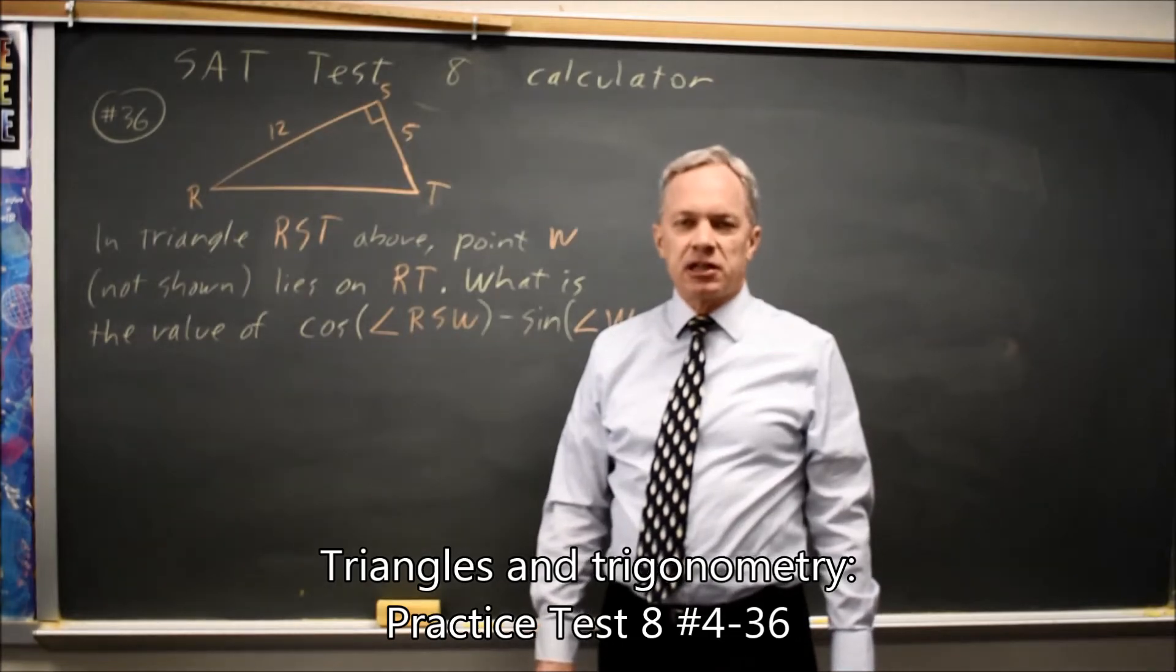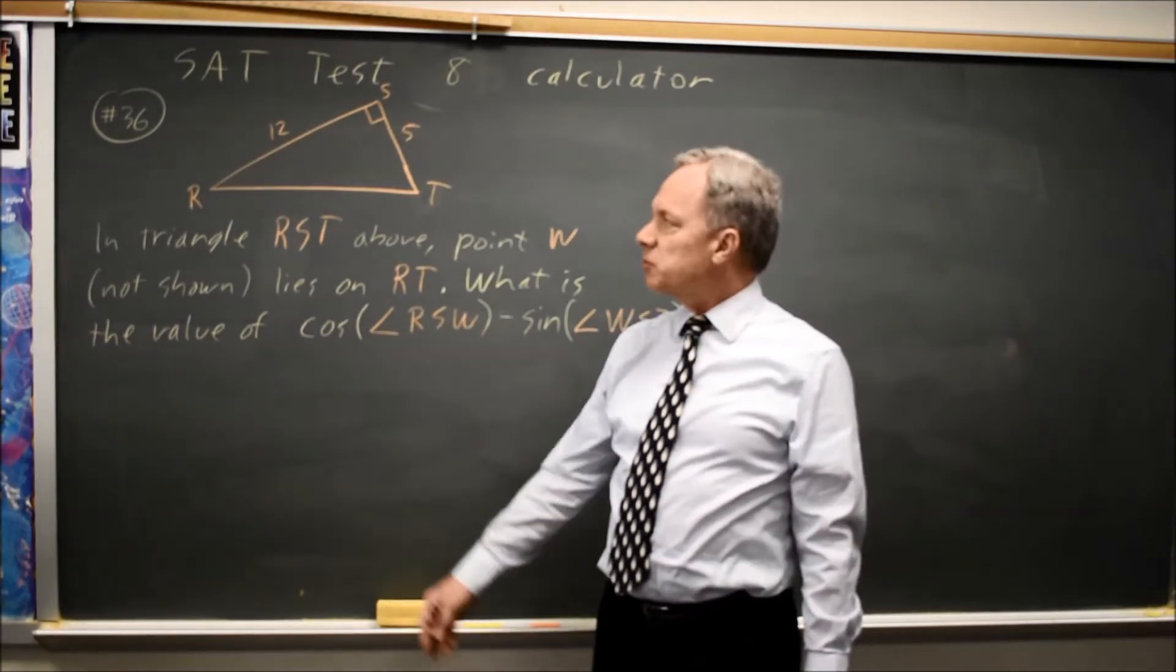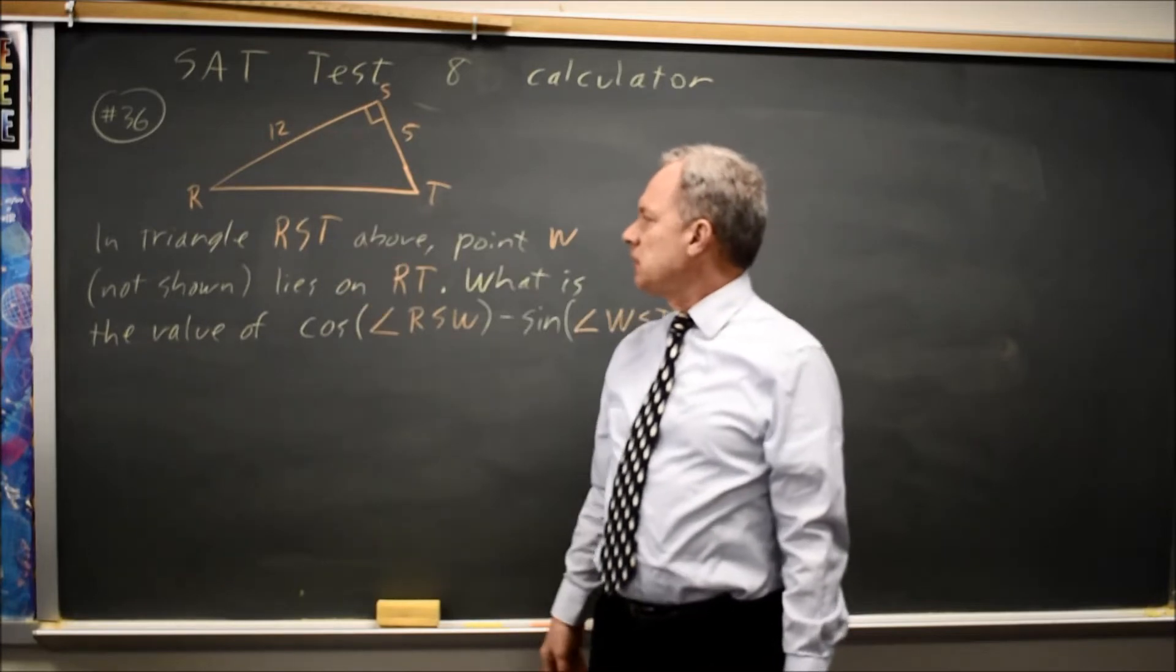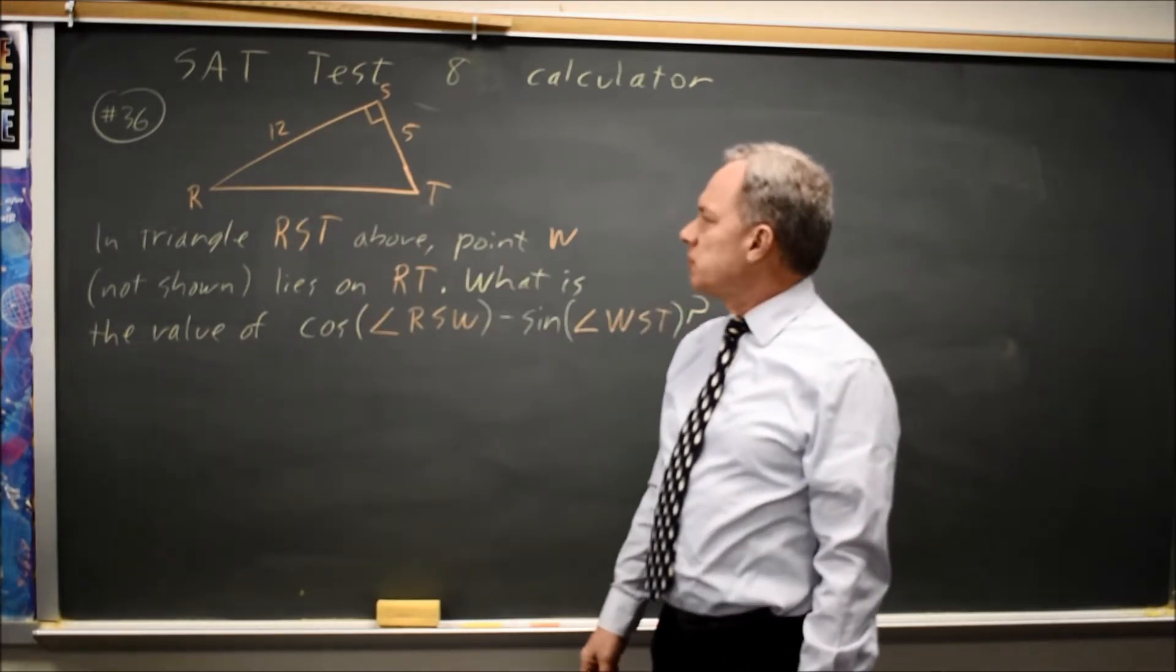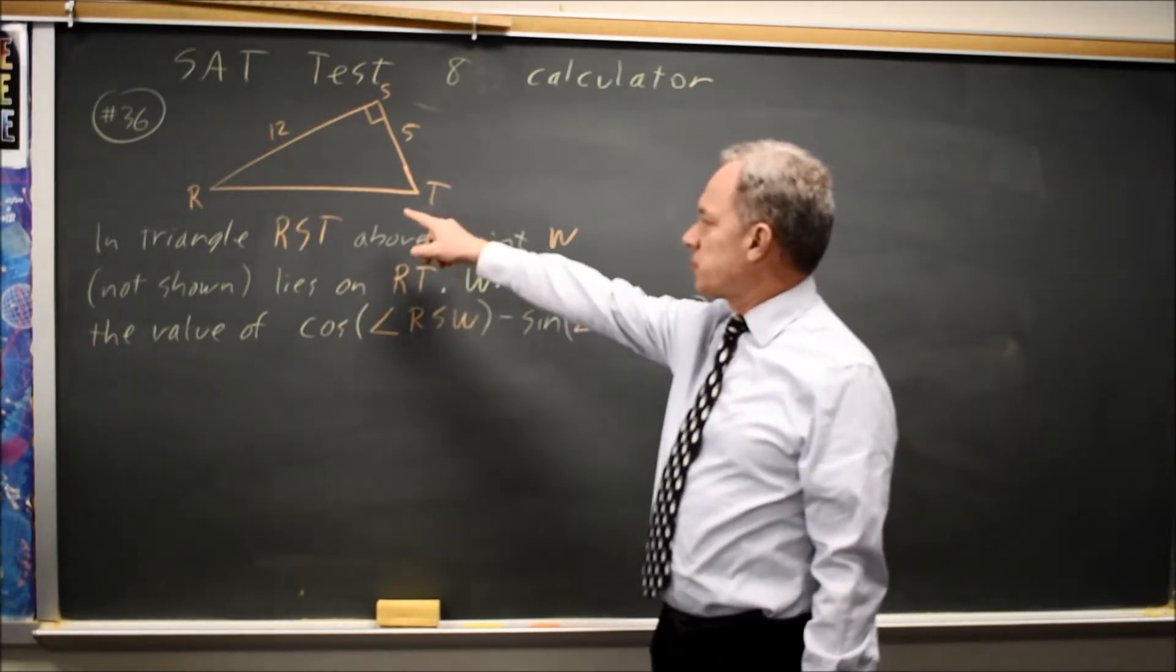This is SAT test 8 calculator, question number 36. College Board gives us a triangle RST, and asks for point W on the hypotenuse.